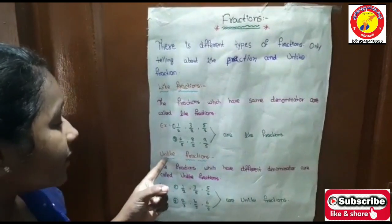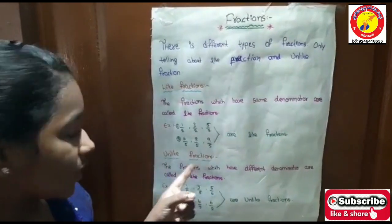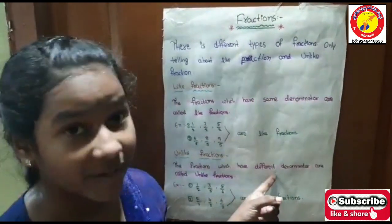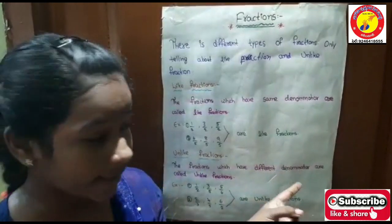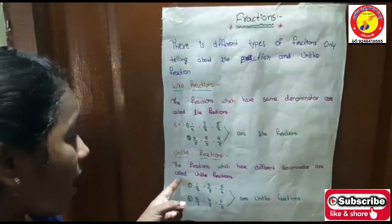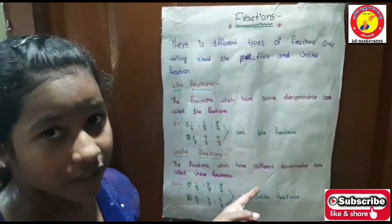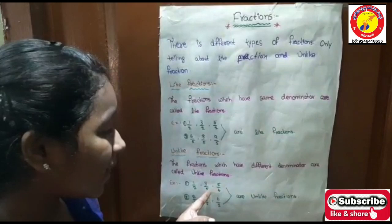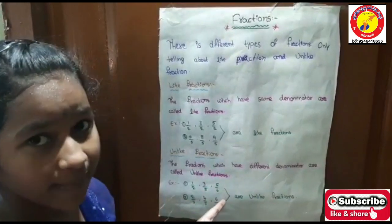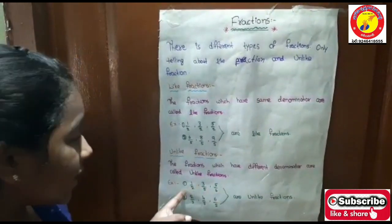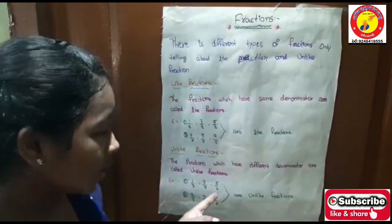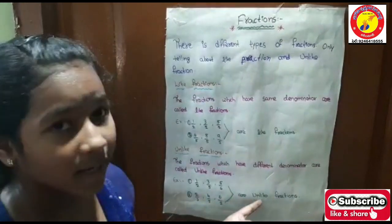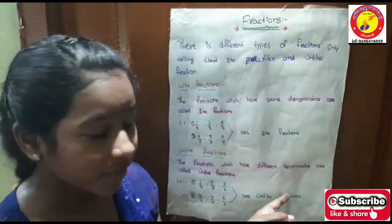Second, unlike fractions. The fractions which have different denominators are called unlike fractions. For example, 1/2, 3/5, 5/6. The denominators are different numbers — 2, 5, 6. So they are called unlike fractions.